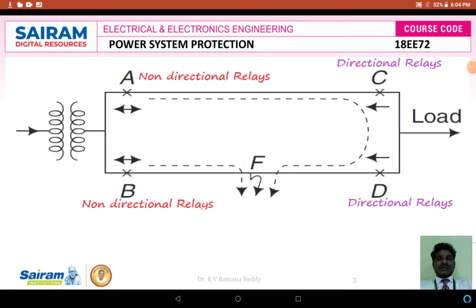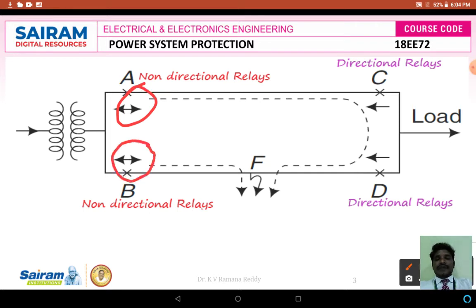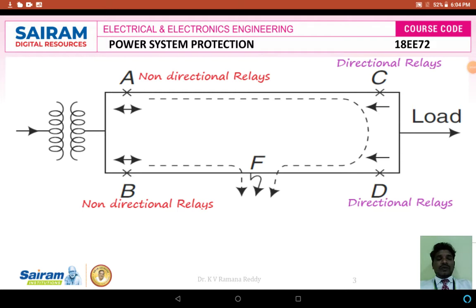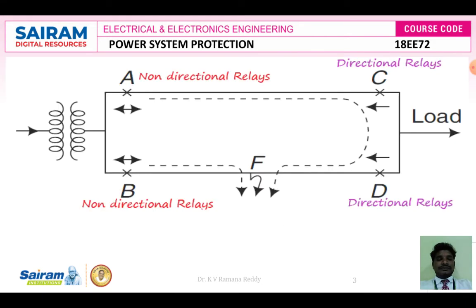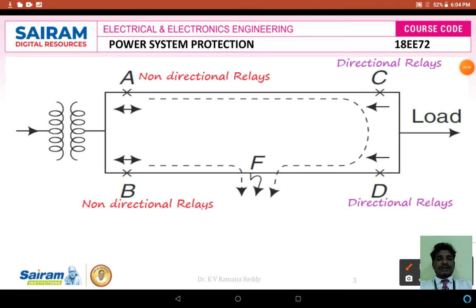Non-directional relays are those relays which respond to currents in either direction. They will allow or detect currents at either direction according to the non-directional principle, represented by arrow marks at either direction. If a fault current comes from either direction, it will sense it and isolate the faulty section of the system from the healthy section. Coming to directional relays, which are directed at only one side — if the fault current flows in that direction, then it senses the fault and separates the faulty section from the healthy section.